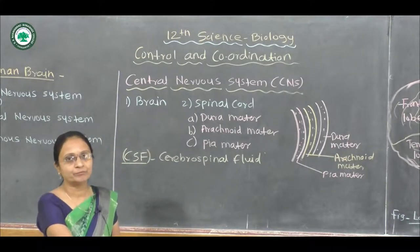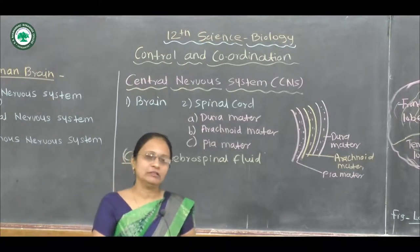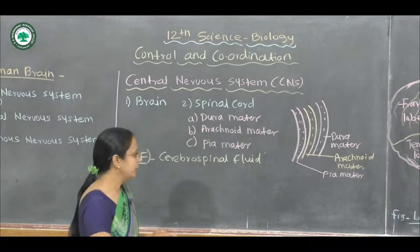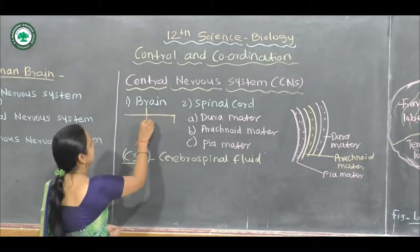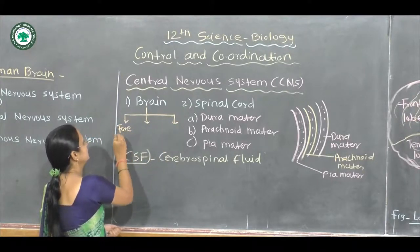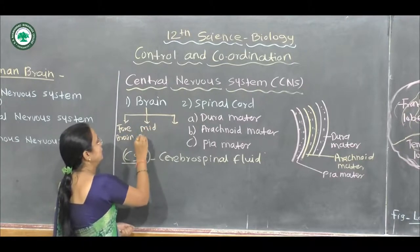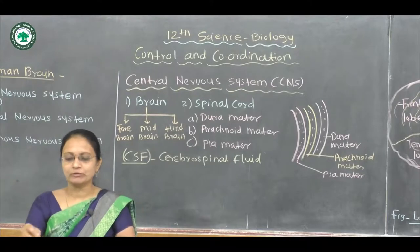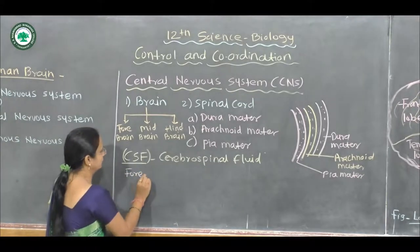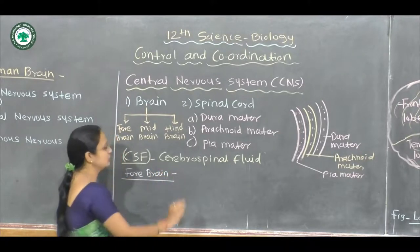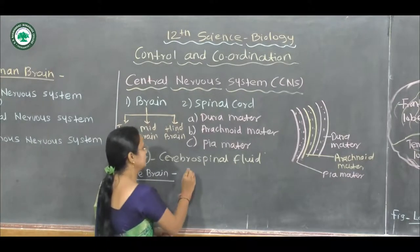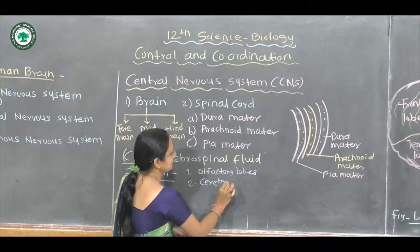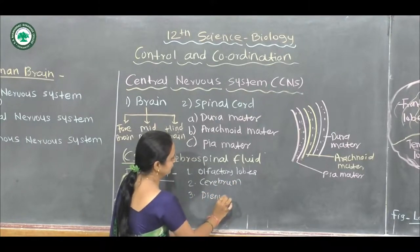Now, the brain is divided into three major parts: the forebrain, midbrain, and hindbrain. The human brain is mostly made up of the forebrain. The forebrain is composed of three parts: the olfactory lobes, the cerebrum, and the diencephalon.